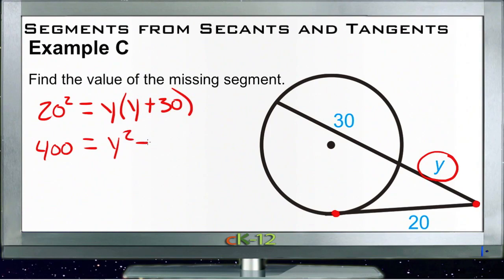So we have 20 squared, that's 400, is equal to y squared plus 30y. And we're going to put them all on the same side of the equal sign here, so I'll have y squared plus 30y minus 400.